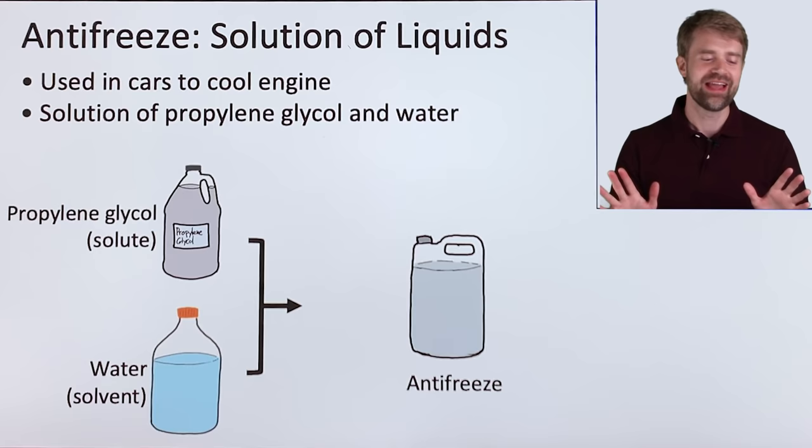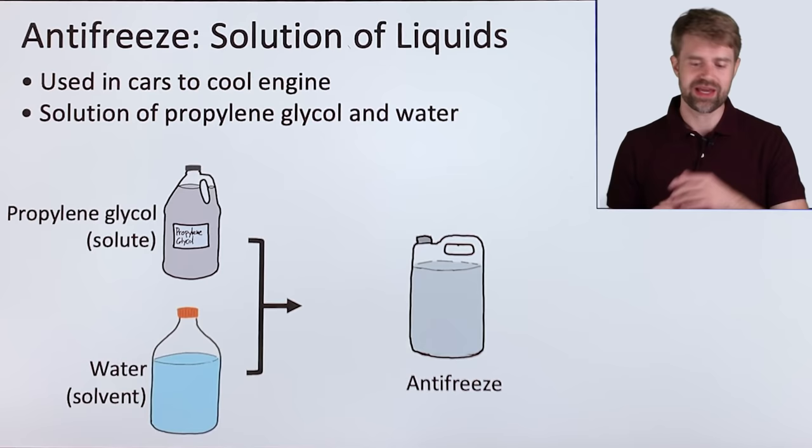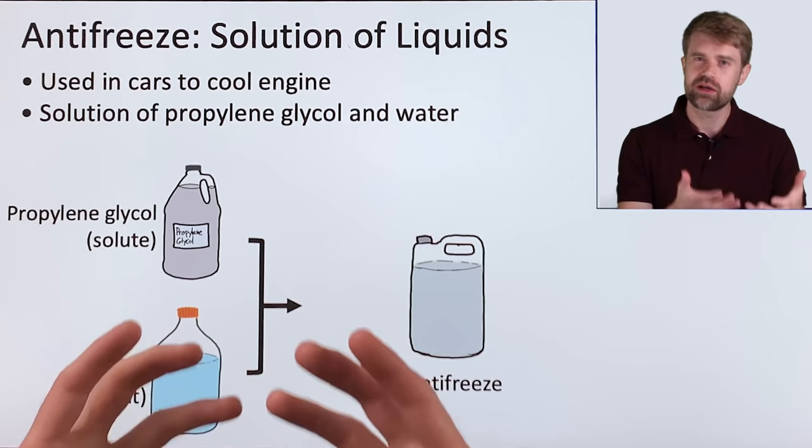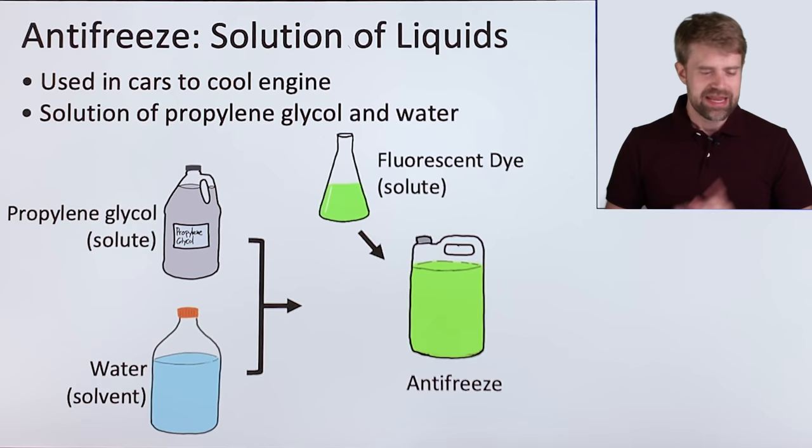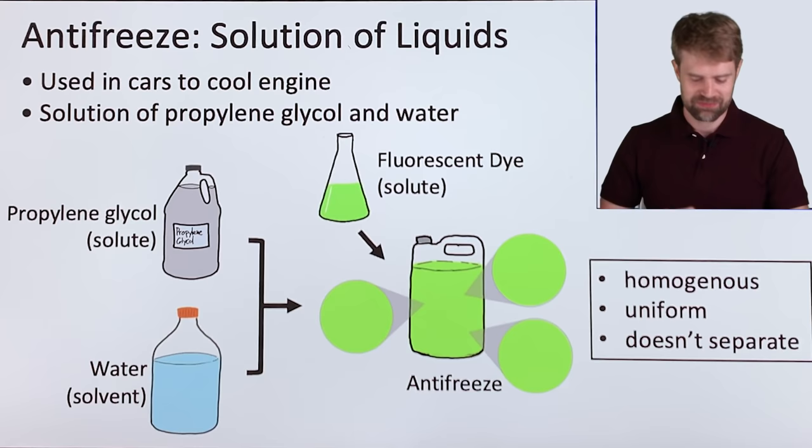Anyway, here's another good example of a solution that we make by mixing liquids. This is antifreeze, which is used in cars to help cool the engine. Antifreeze is made by taking propylene glycol, which is a thick, clear, viscous liquid, and mixing it with water. Now, sometimes there's a little fluorescent dye in there as well, that's another solute. But, as you'd expect, the liquid solution that we get is homogeneous. It looks uniform in composition, and it doesn't separate out or settle out over time.